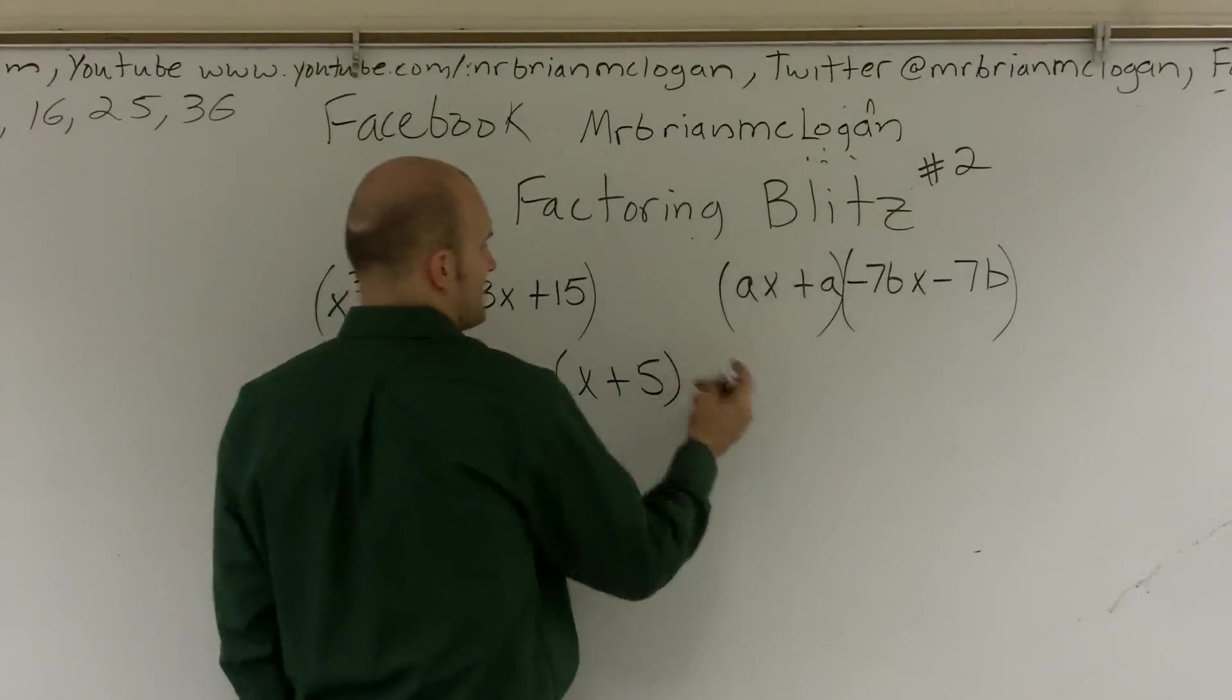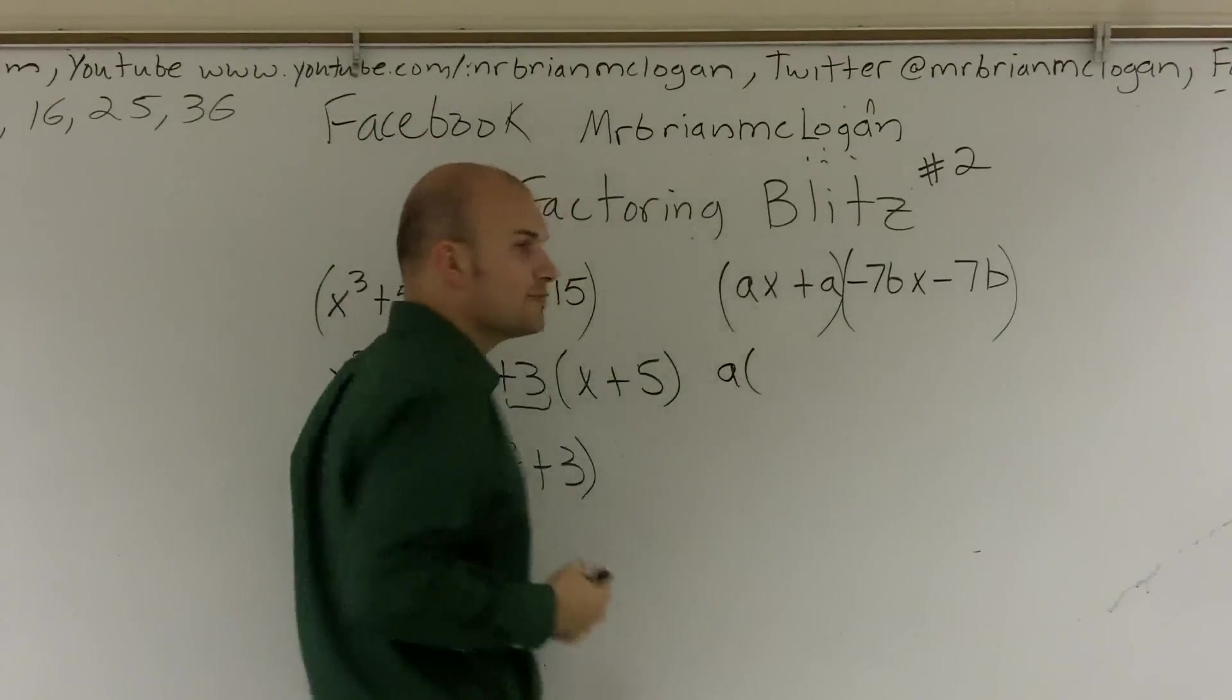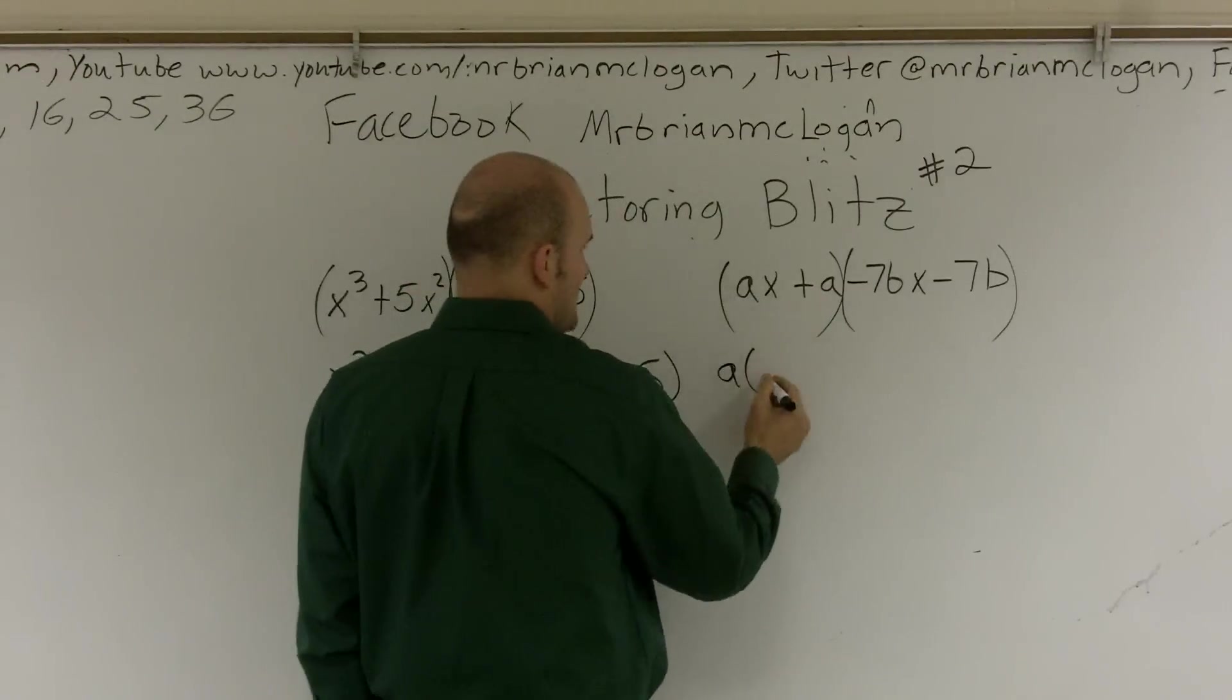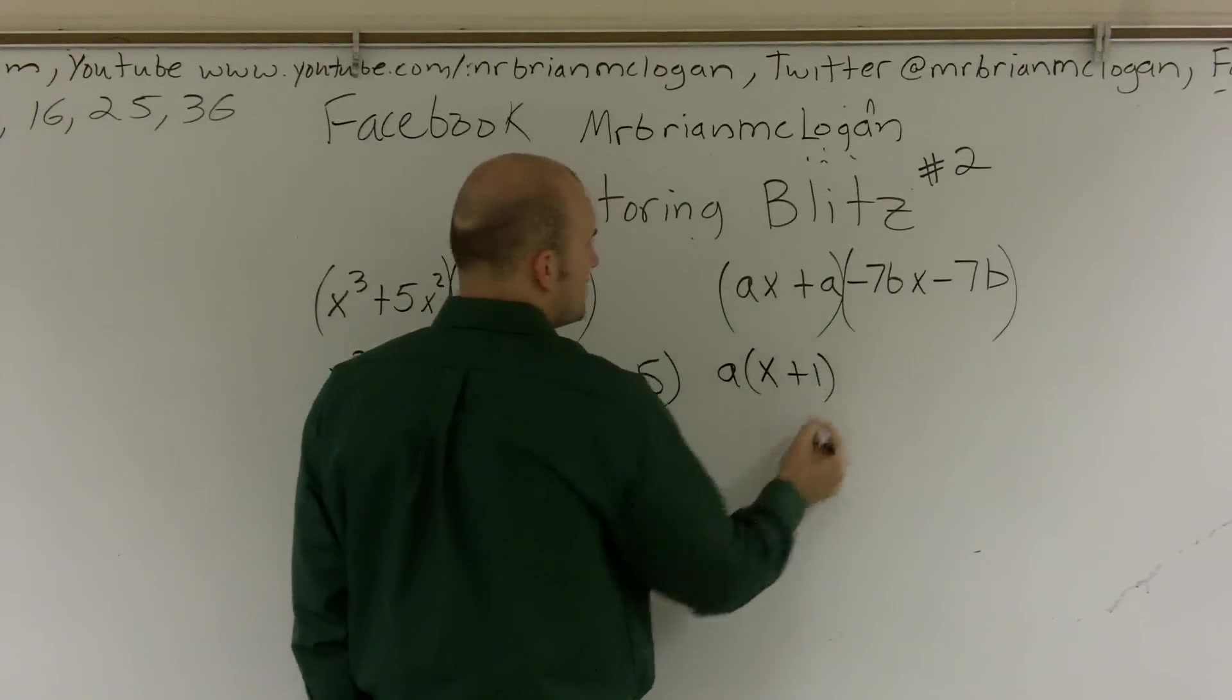And so here, I can factor out an a because I want to group them so I can factor the same thing out. When I factor out an a, I'm left with x plus 1.